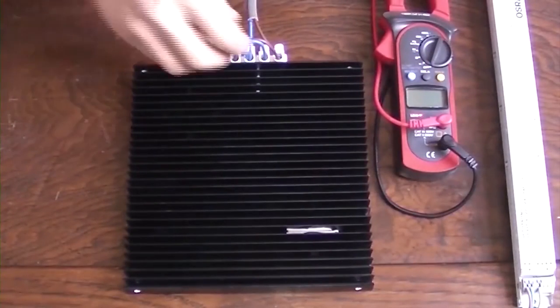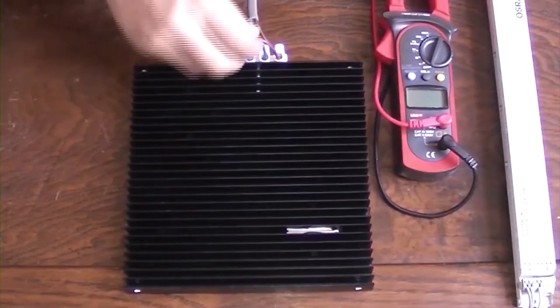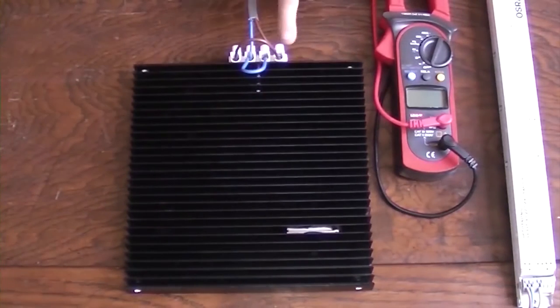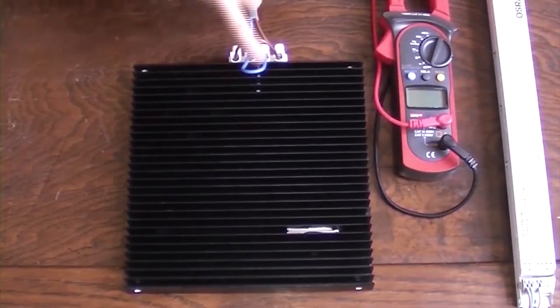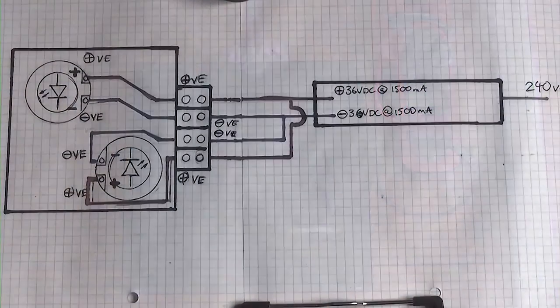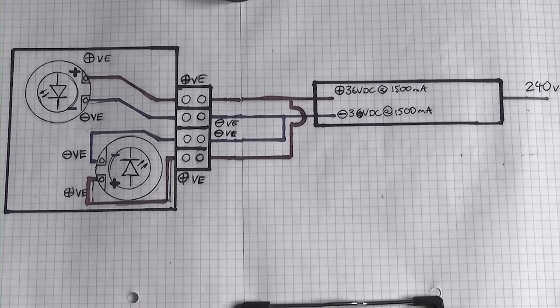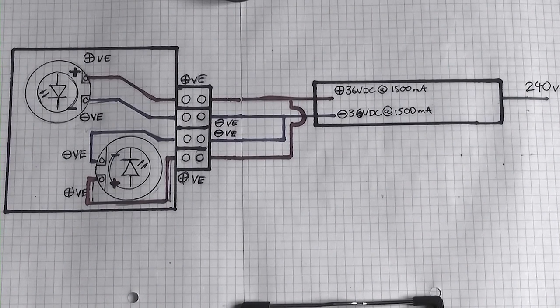And now we're going to drive this with just a single one of those drivers in parallel. This is just a simple matter of bridging the positives to the negatives and the negatives to the negatives, and just simply connecting the one driver. So now what we're doing is we're dividing the total 1500 milliamps between the two cobs, giving them about 750 milliamps a piece at 36 volts.